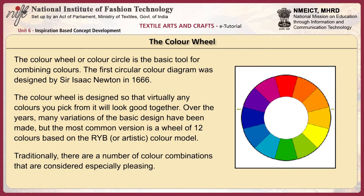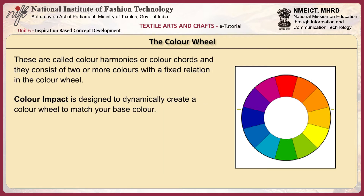The color wheel or color circle is the basic tool for combining colors. The first circular color diagram was designed by Sir Isaac Newton in 1666. The color wheel is designed so that virtually any colors you pick from it will look good together. Traditionally, there are a number of color combinations considered specially pleasing — these are called color harmonies or color chords, and they consist of two or more colors with a fixed relation in the color wheel.